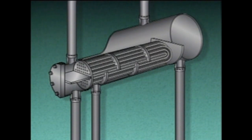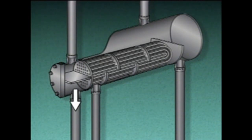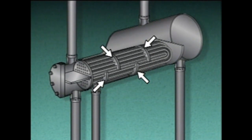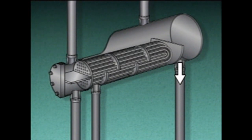Kettle-type reboilers are a type of shell and tube heat exchanger. They're primarily used to vaporize process liquids from a distillation column and return only the vapor back to the column. The major parts of this reboiler include a shell, a tube bundle, a tube inlet, a tube outlet, a shell inlet, baffles, a vapor outlet, an overflow weir, and a liquid outlet.